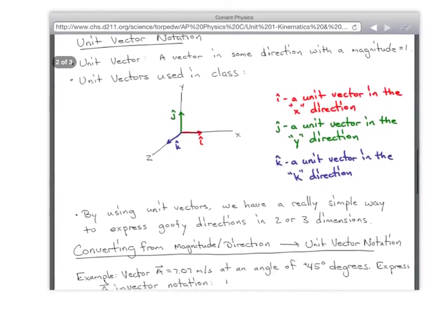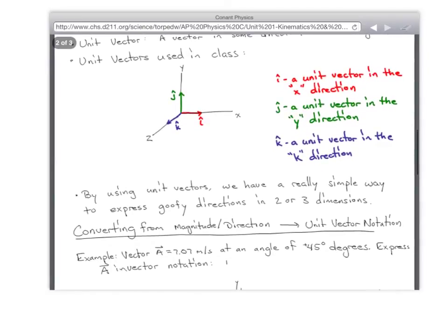All right. So say we are given a vector that has a magnitude of 7.07 meters per second at an angle of 45 degrees above the horizontal. What am I talking about? What could this be an example of? Yeah, right? Yeah. 7 meters per second at an angle up, like, 45 degrees. Yeah, that's what I'm talking about. So, yeah. What if you wanted to convert that into i hat and j hat? How would you do that? Into unit vector notation.